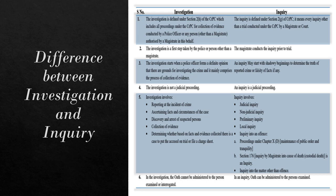Fifth, the elements involved under investigation are: first, reporting the incident of crime; second, ascertaining the facts and circumstances of the case; third, discovery and arrest of the suspected person; fourth, collection of evidence; and fifth, determining whether, based on the facts and evidence collected, there is a case to put the accused on trial or to file a charge sheet.